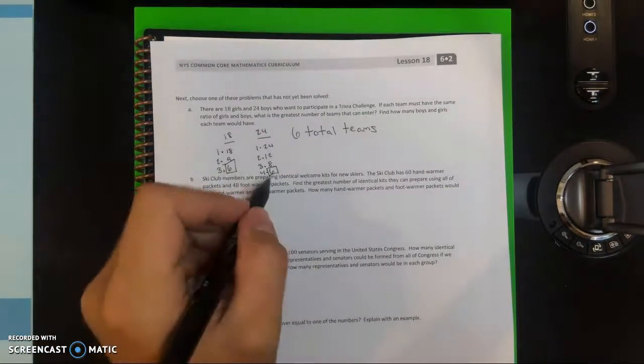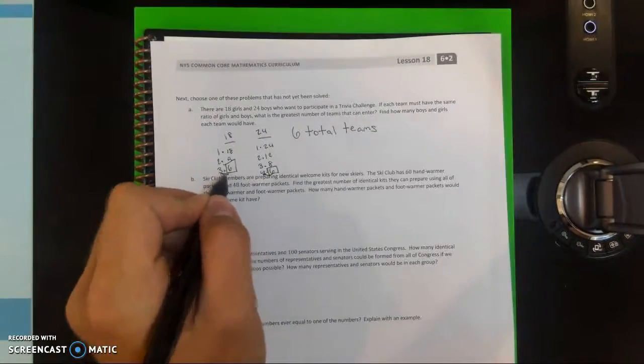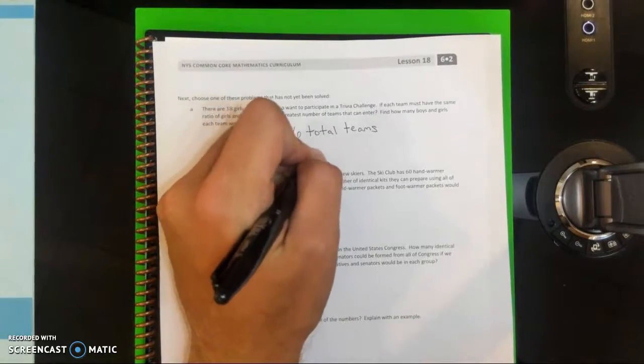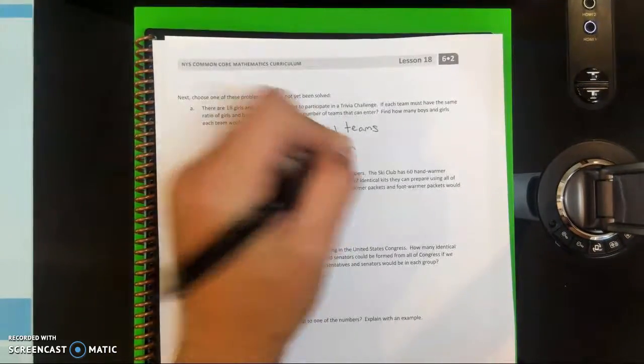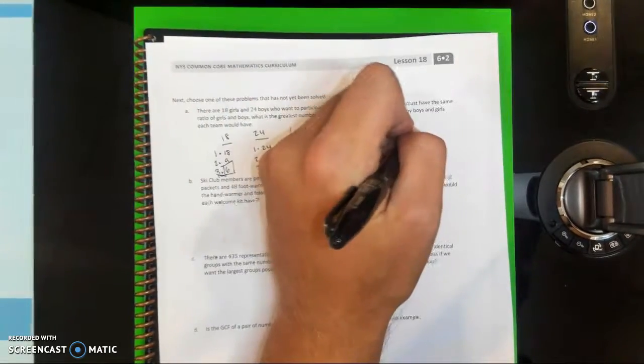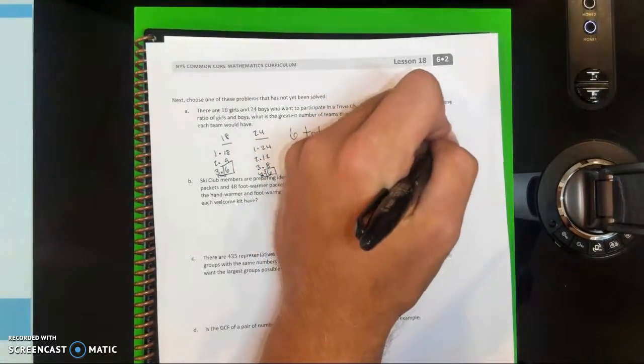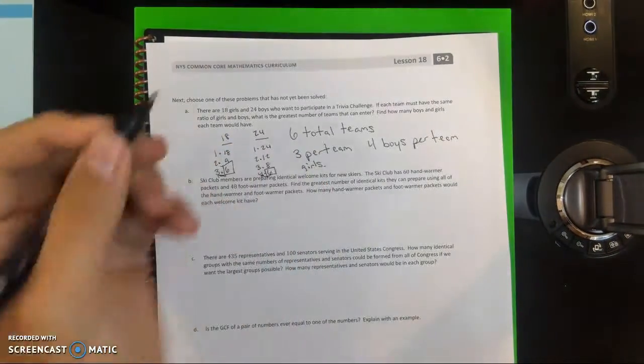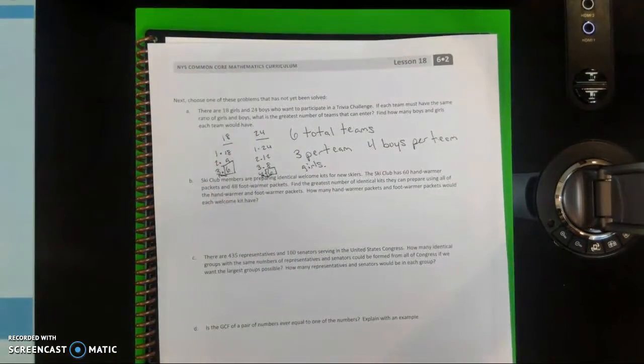In this case we already have their factors, so we already know how many there's going to be per team. So there would be 3 girls per team and 4 boys per team. And it's as easy as that. I hope this helped.